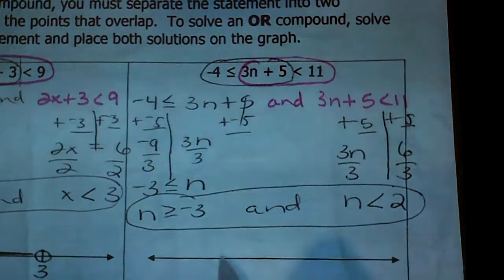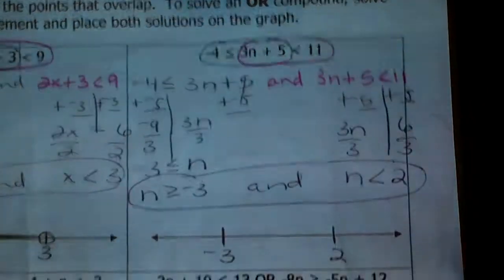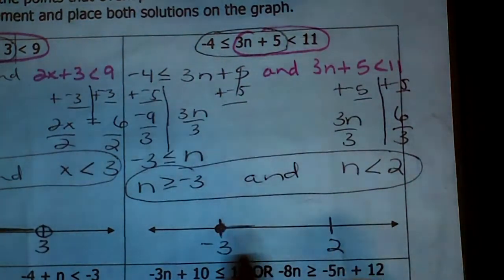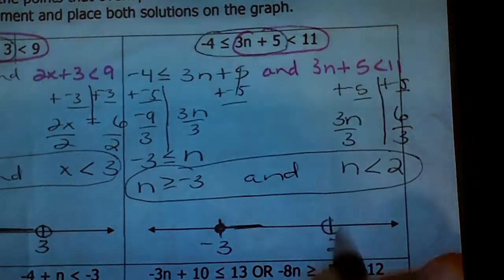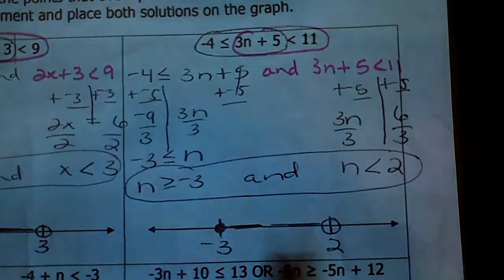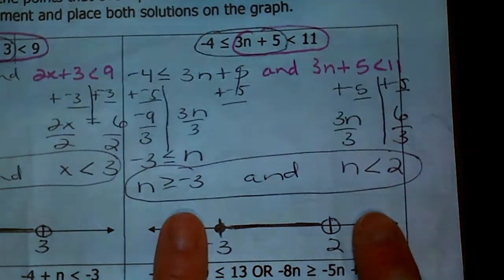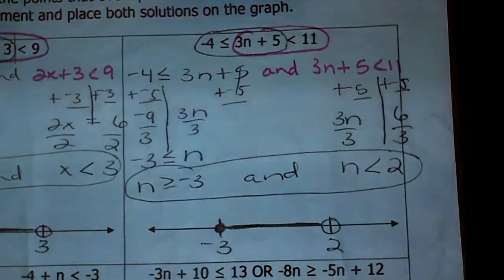To graph this 'and': the lower value negative 3 goes on the left, higher value 2 on the right. n is greater than or equal to negative 3 — close that circle and shade toward the right. n is less than 2 — open that circle and shade to the left. The points where the graphs overlap give you the solution, meaning n can be all values within that range because both statements must be true.